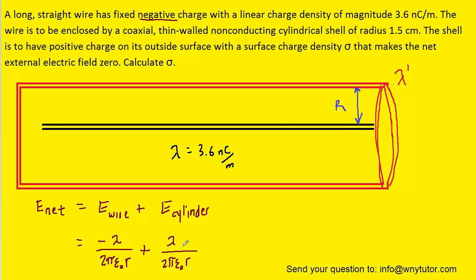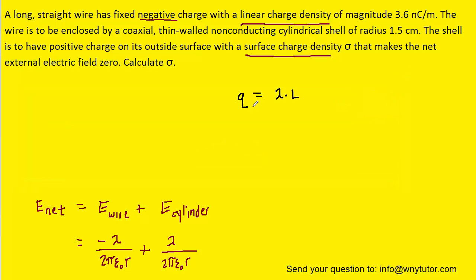Now it turns out that our next step is to establish a relationship between the surface charge density of the cylinder and its linear charge density. And to see that relationship we can begin by noting that the total amount of charge would equal a linear charge density multiplied by a length.